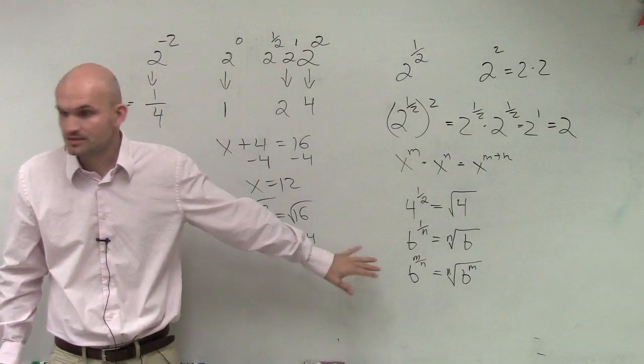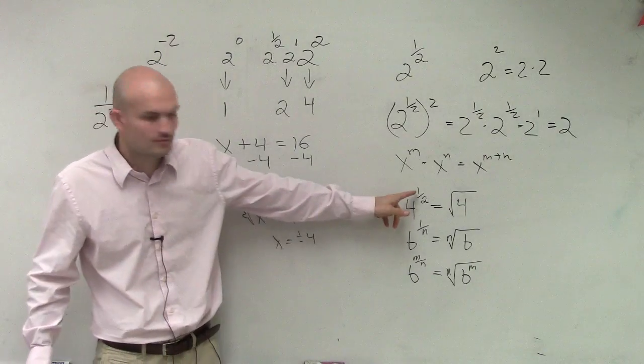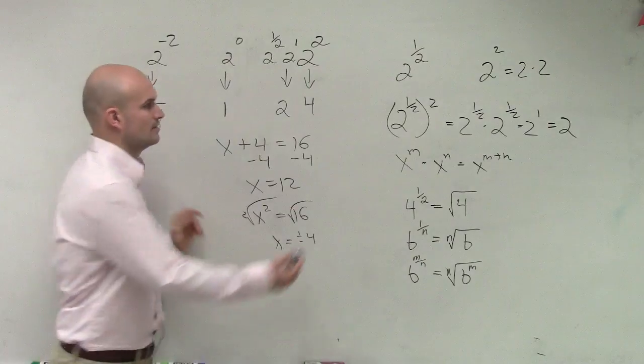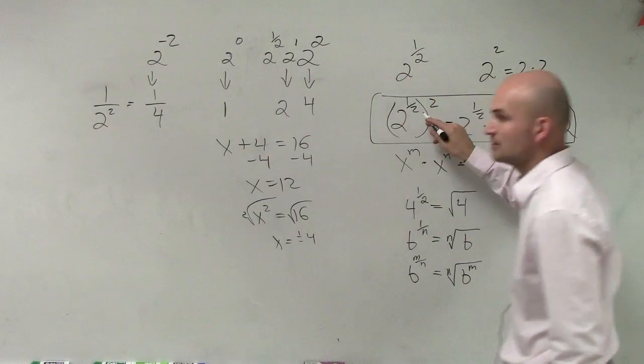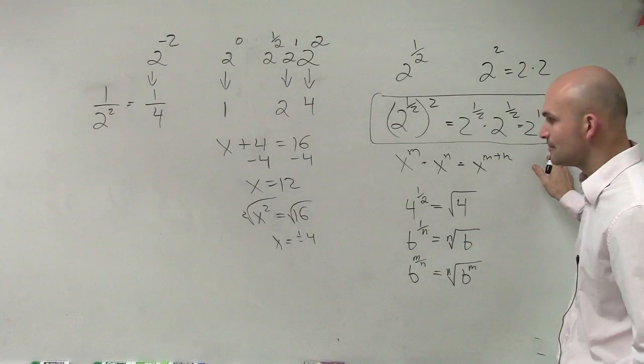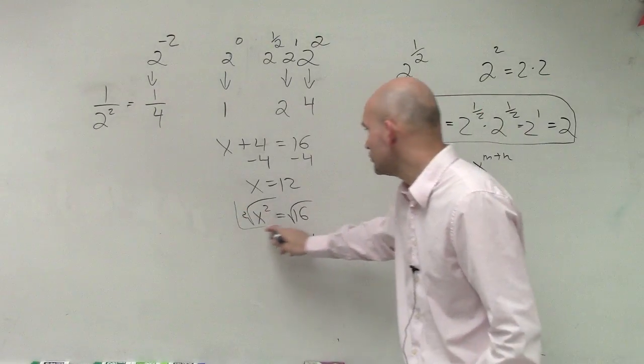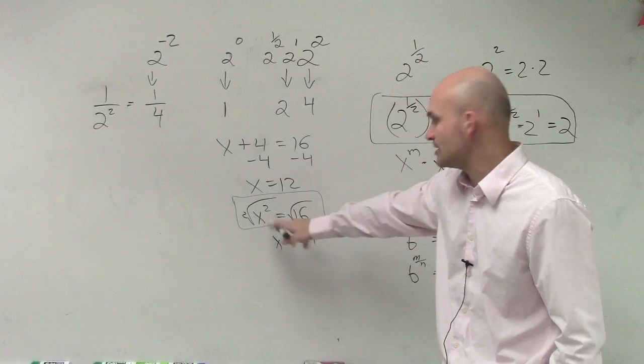I mean, we're going to go over some examples. Do you understand how the 1 half? So when I raise something to the 1 half power and square it, there are inverse operations. When I square root something squared, those are inverse operations. Those just give you x.